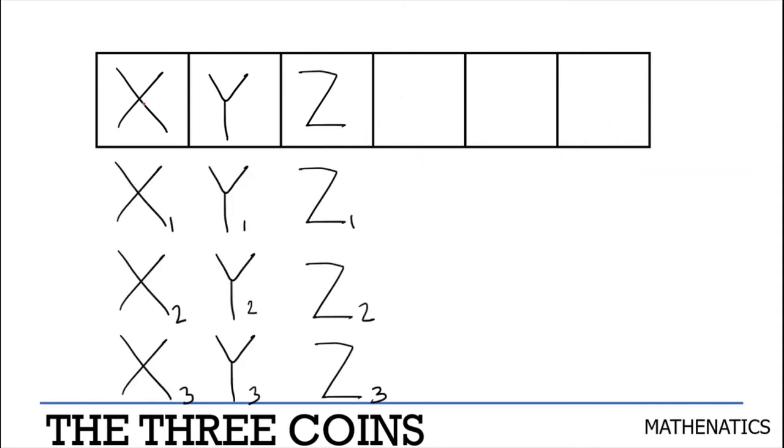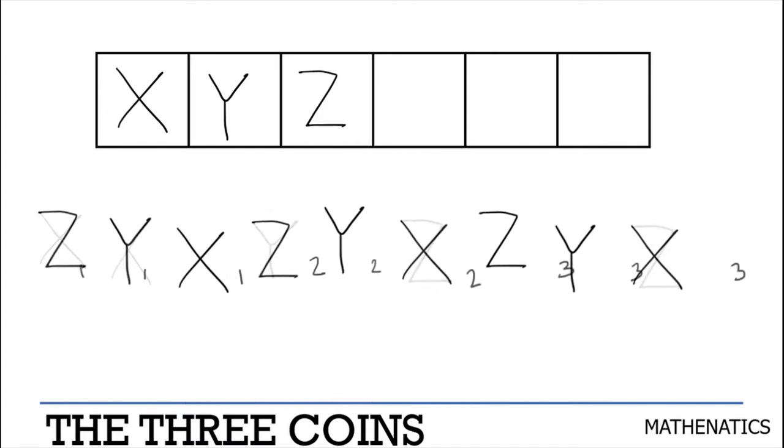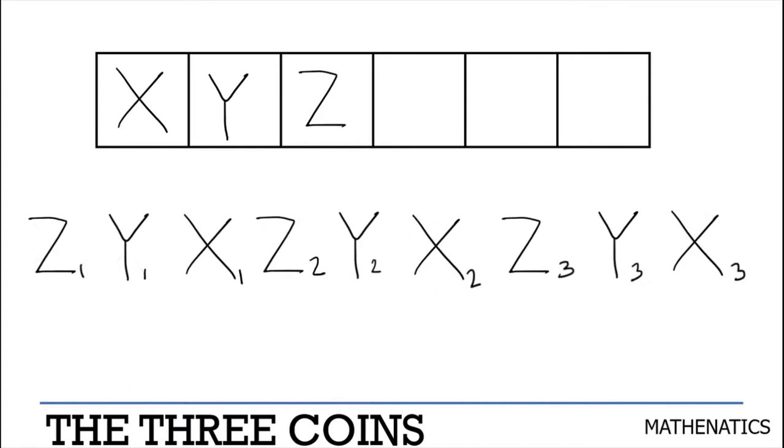And so we end up with nine unique symbols. Now, a way that we can move X, Y, and Z to their corresponding places would be equivalent to one unique rotation, or rather permutation, of these nine symbols. However, we do have some constraining factors, which we will go over.